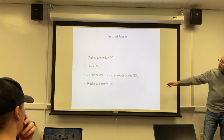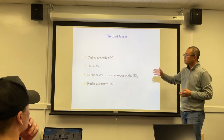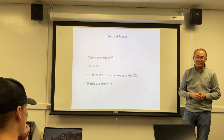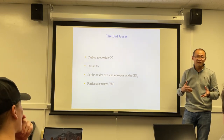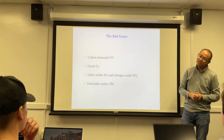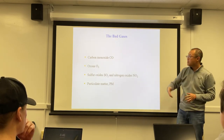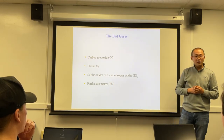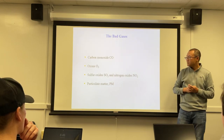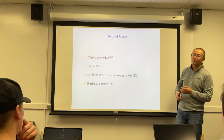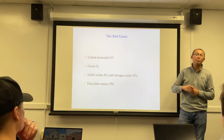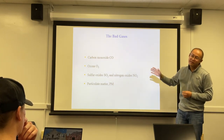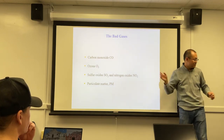Here are four of the tiny components that make air less livable — the bad gases. These include: carbon monoxide (CO), ozone (O3), sulfur oxide (SO2), and nitrogen oxide (NO2). Another one is called PM — particulate matter. We'll study these in detail next class on Thursday.